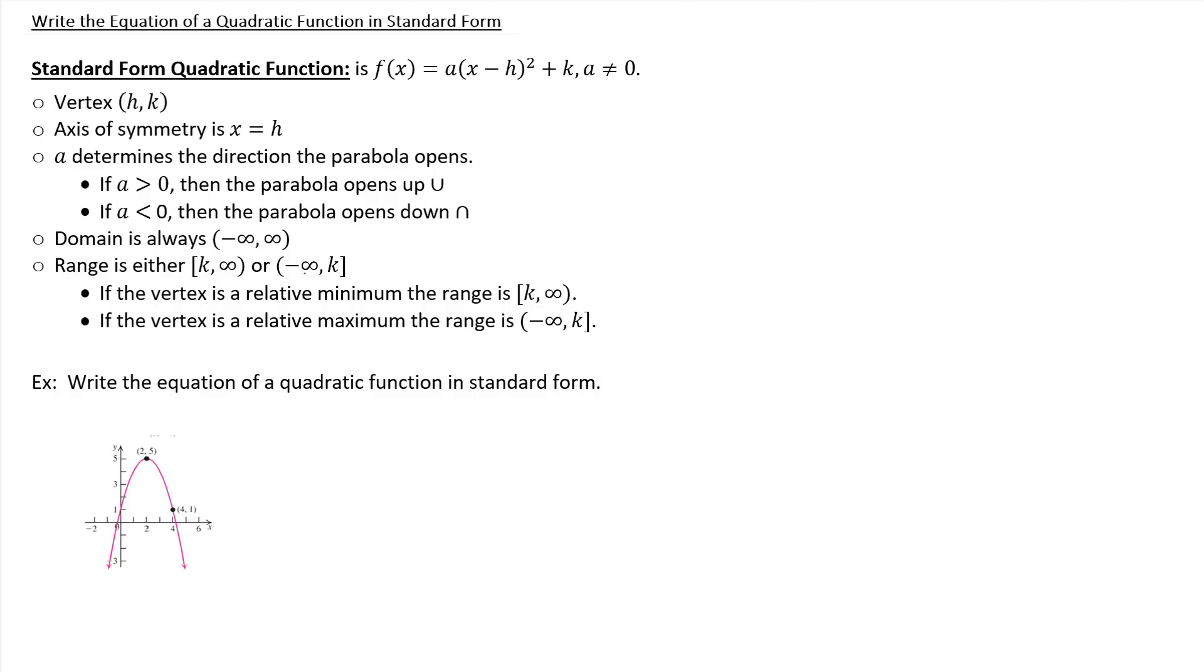The focus of this lesson is on writing the equation of a quadratic function in standard form given the graph. So let's go ahead and write down the standard form of a quadratic function since that's our goal. f of x equals a times x minus h squared plus k. And this is where h comma k, that ordered pair, is the vertex of our quadratic function.